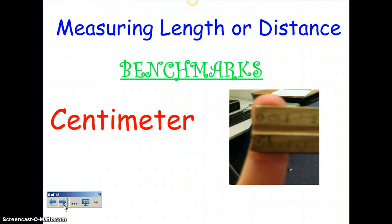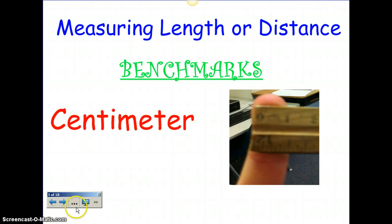Let's go over some benchmark measurements for measuring length or distance. A centimeter is about the distance across the tip of a finger. As you can see, we have a picture of that — that's about one centimeter. Everybody's body is different, but if you ever want to know what a centimeter is, look at your index finger and look at how wide across it is, and that would be a centimeter.